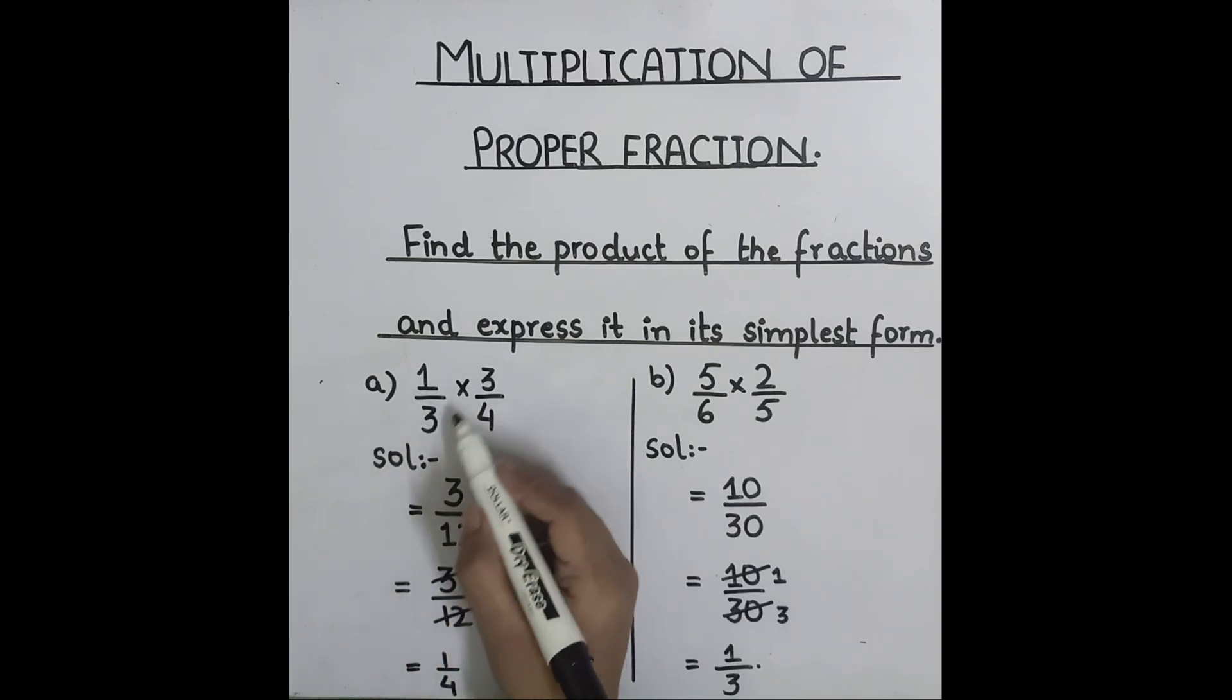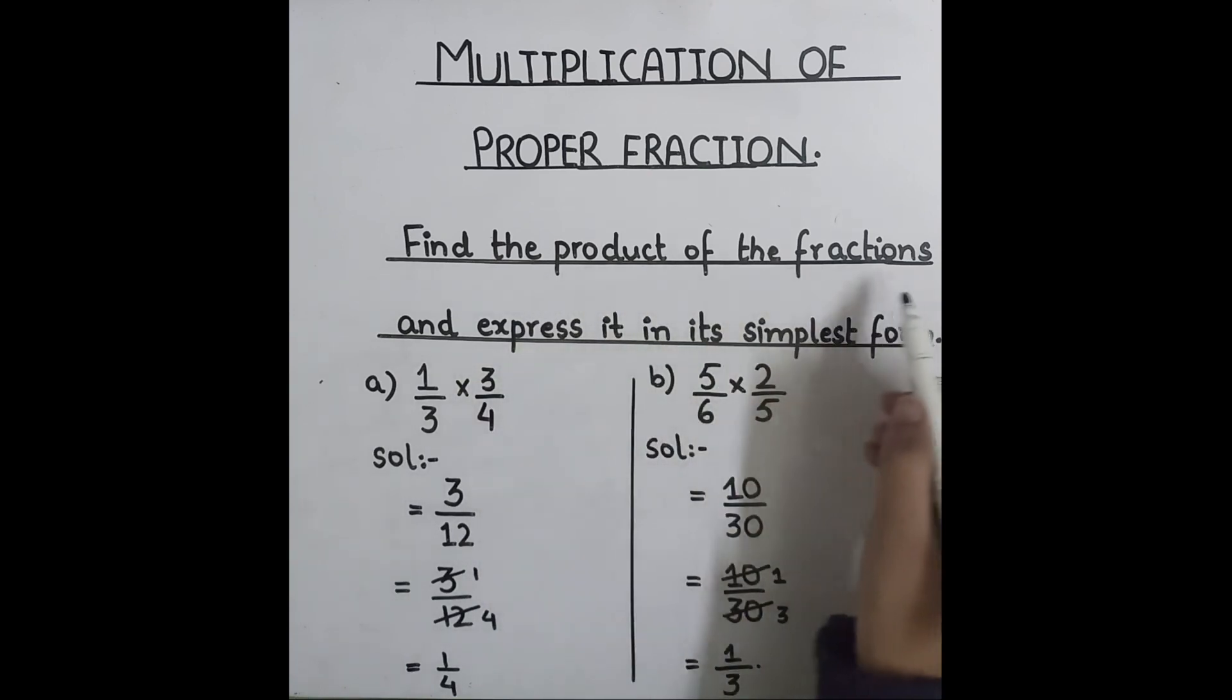One over three multiply by three over four. Find the product of the fractions and express it in its simplest form.